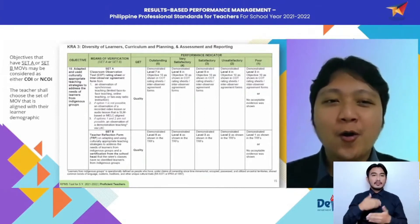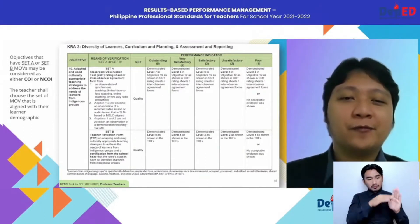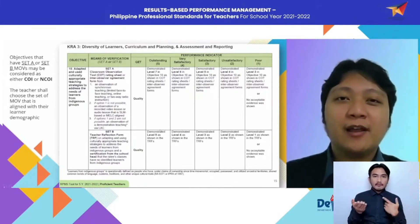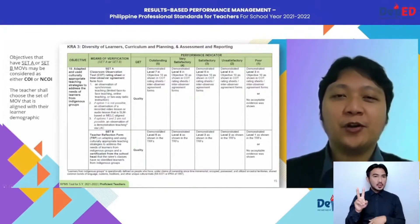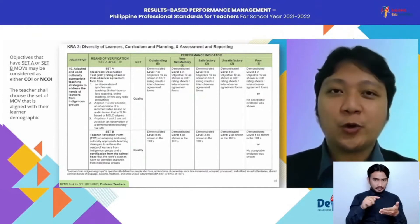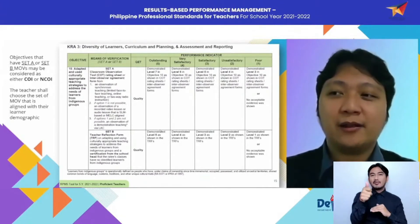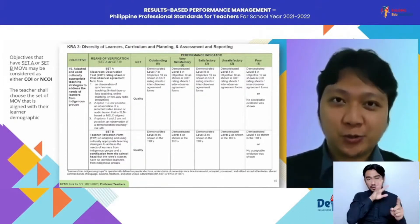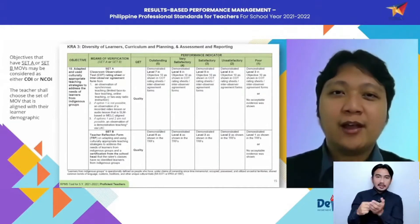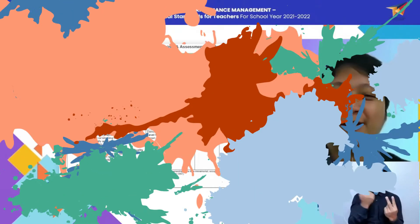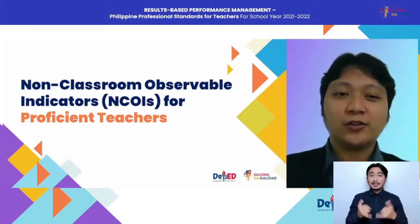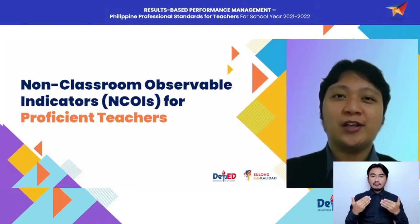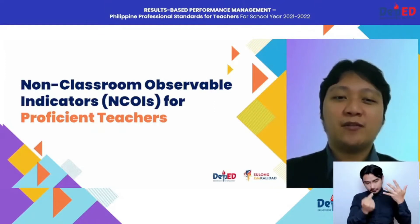A quick reminder on all indicators that follow classroom observable modalities: you are expected to submit a maximum of two MOVs for the whole school year — just two. But if you wish to go beyond that, it's up to you. My tip is to choose the two classroom observations with the highest scores. That ends our discussion on the classroom observable indicators. We will now proceed with the rest of the objectives, which have non-classroom observable indicators.